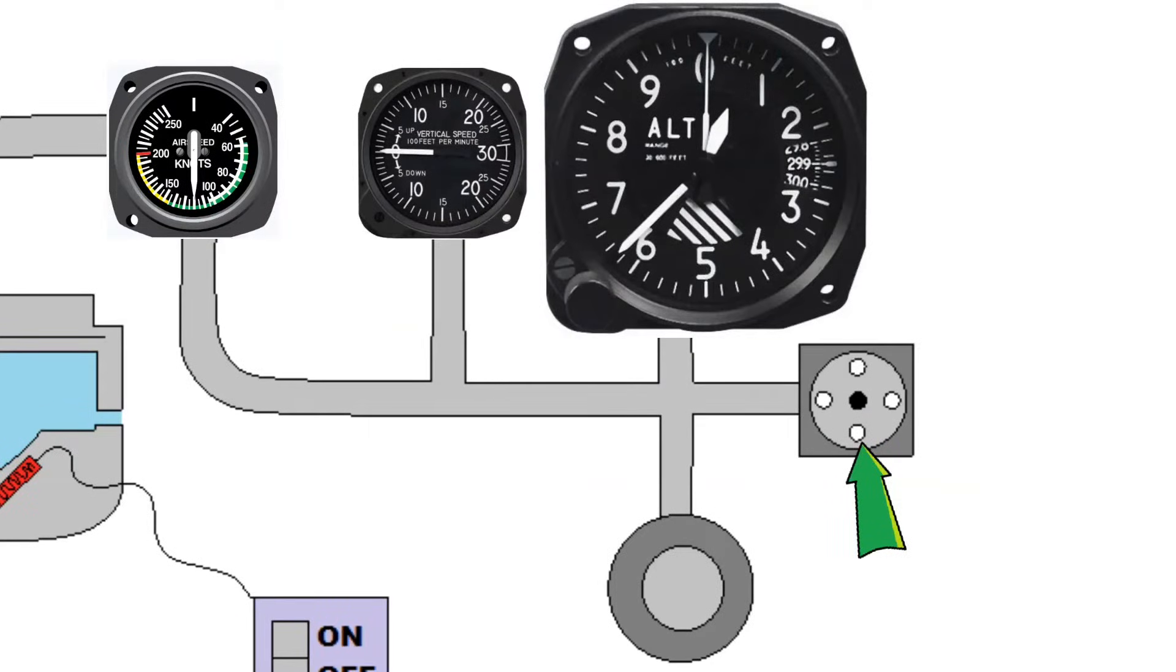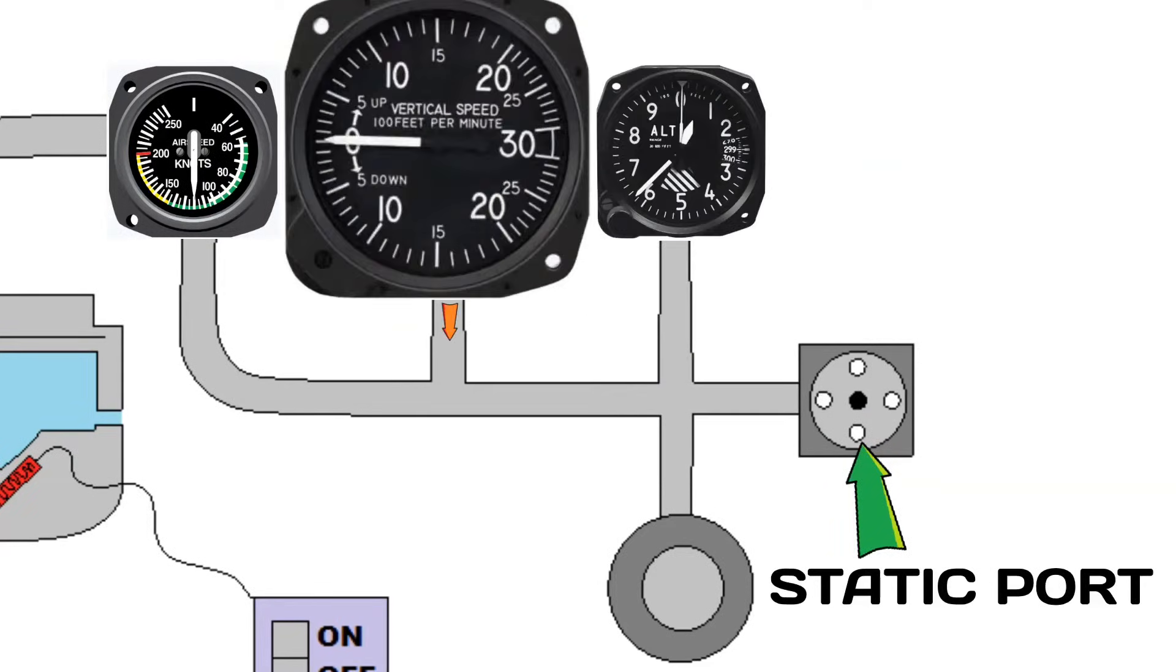The other instrument that uses a static port is the vertical speed indicator. This instrument allows air to escape or come in through a small hole which is vented through the static port. By allowing air to come in or go out, this instrument senses the pressure differences as we climb or descend. Then it gives us a reading in feet per minute.